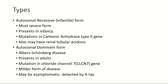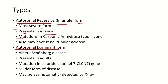Osteopetrosis is of two types: the autosomal recessive form and the autosomal dominant form. The autosomal recessive form is the most severe form; it usually presents in infancy and is also called the infantile form. An important thing to remember is that in the autosomal recessive form there is a mutation in the carbonic anhydrase type 2 gene. How does this mutation affect the bone?